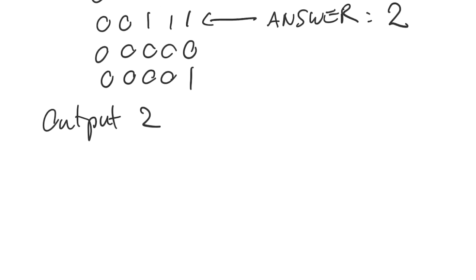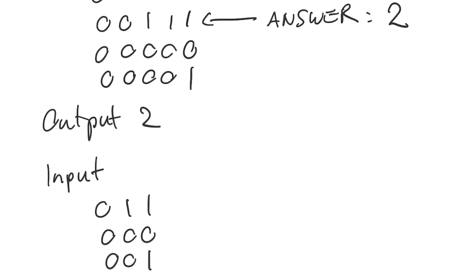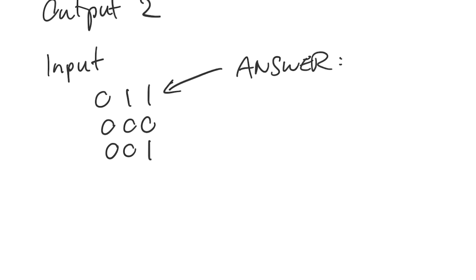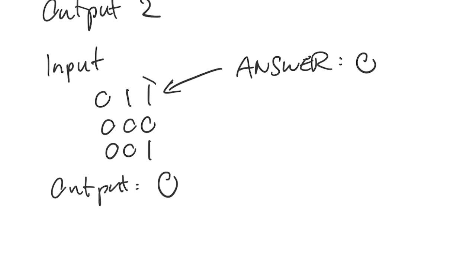Let's do one more example. As input we have: [0,1,1], [0,0,0], [0,0,1]. The output in this case is 0, because row 0 has the maximum number of ones, which is two.